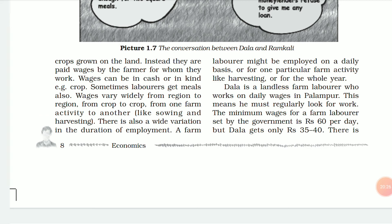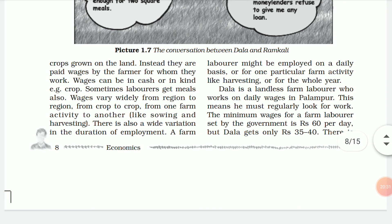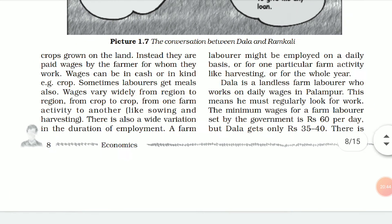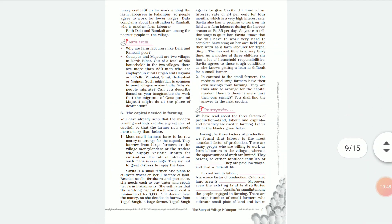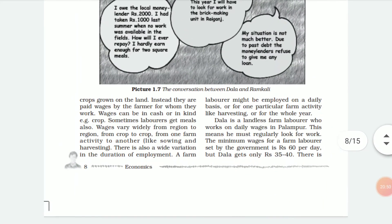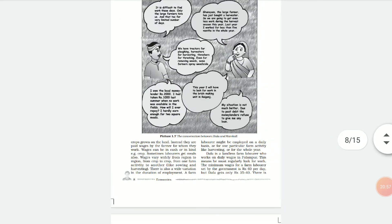There is also wide variation in the duration of employment. Some people work 6 hours, some 8, some 10 hours. Farm labourers might be employed on a daily basis, for one particular farm activity like harvesting, or for the whole year — it varies considerably.